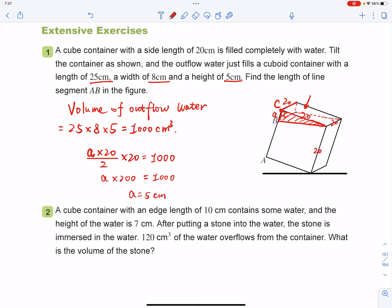So we found A. Since we found A, which is BC equals to 5, and you know that BC and AB is the side length of this cube, which is 20, so AB in the figure equals to 20 minus BC. So you minus 5, which equals to 15 centimeters. And let's go.